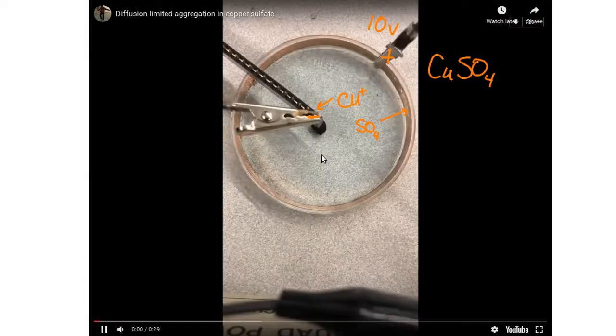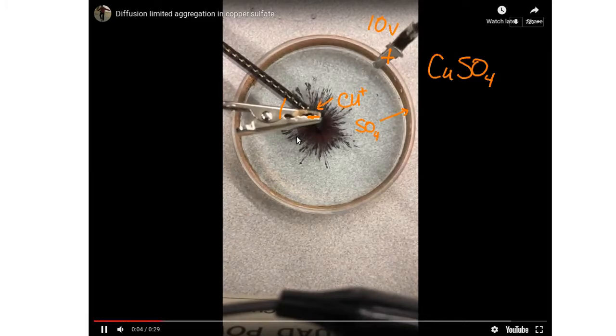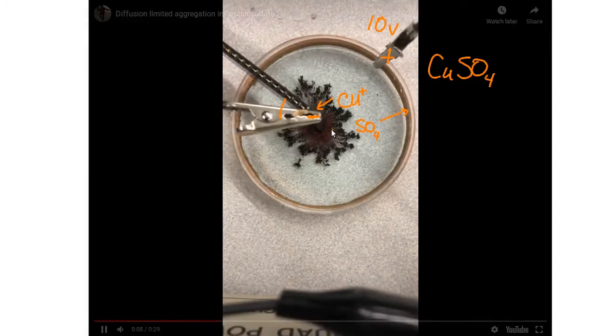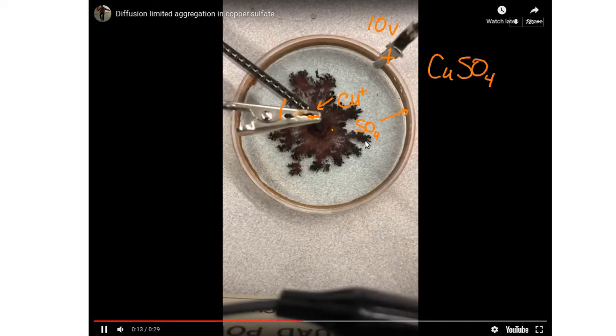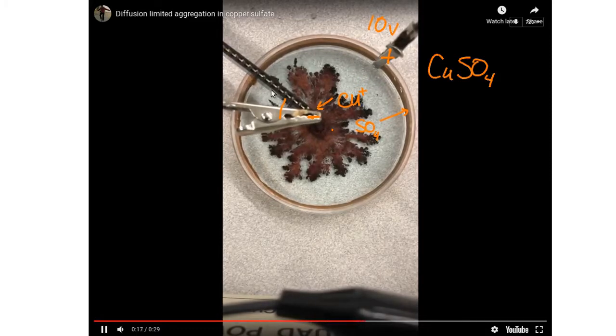Let's watch that again. So as this happens, we've got ions wandering around here in the bluish solution, and when they strike a place that already is occupied by metallic copper crystal here, they attach to it. And you can see the complex border that's forming as this crystal grows. This is at several times actual speed.